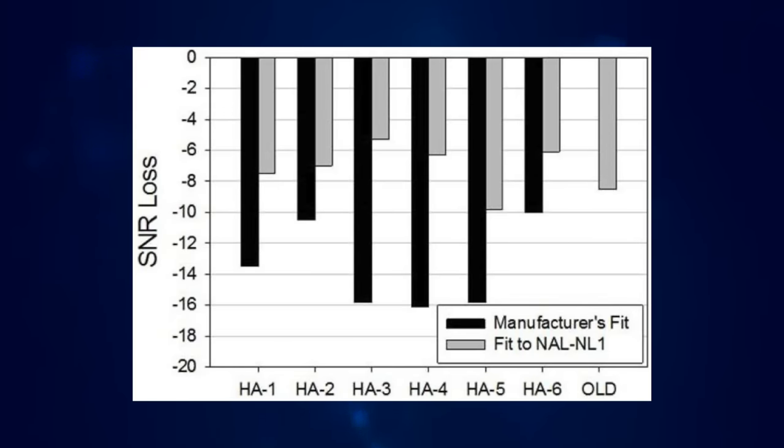And here's what they found. The solid black bars indicate the performance of each premium digital hearing aid with automatic first fit settings based on each patient's audiogram. The further down on the graph the bars go closer to negative 20, the worse these hearing aids performed in background noise. On the other hand, the solid gray bars indicate the performance of each hearing aid after real ear measurement was performed by an audiologist. As you can see, each one of these gray bars got shorter, indicating that each one of these hearing aids dramatically improved their SNR loss scores after real ear measurement was performed.